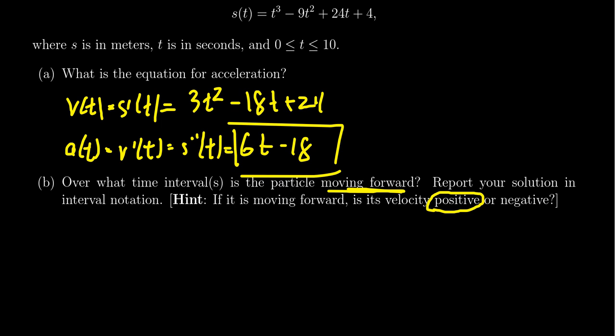So we have to figure out when is the velocity function positive. We will begin this by solving the equation velocity is equal to zero, which based upon our calculation above, we get 3T squared minus 18T plus 24. When is that equal to zero?